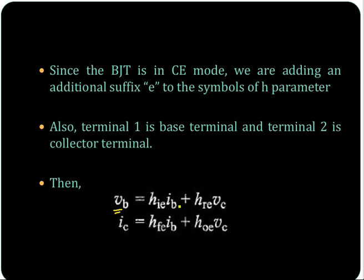So HIE times I1 is IB, plus HRE times VC, where VC is V2. Then IC equals HFE times IB plus HOE times VC.